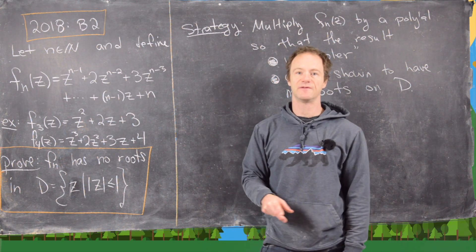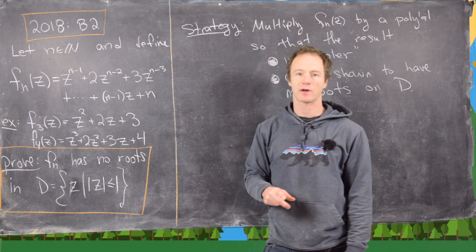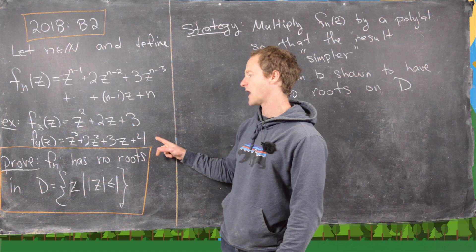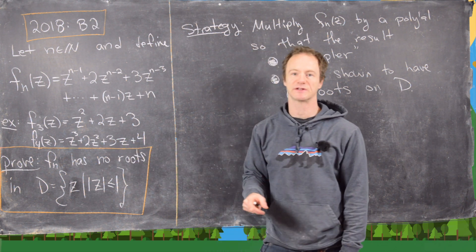I've given some examples here to get a feel for what this looks like. So f3 of z is z squared plus 2z plus 3, and f4 of z is z cubed plus 2z squared plus 3z plus 4.